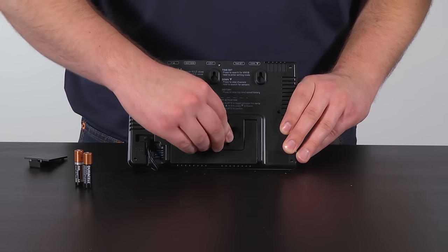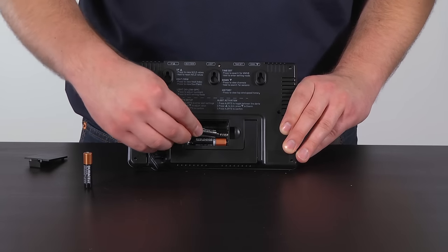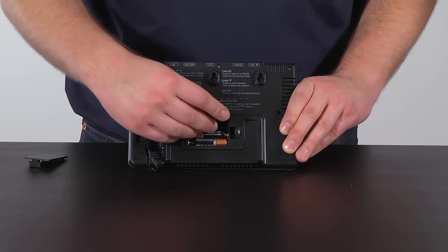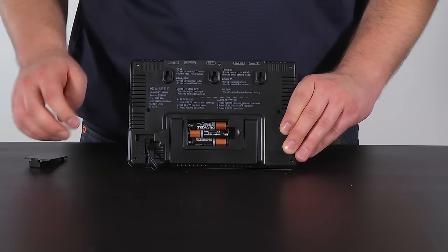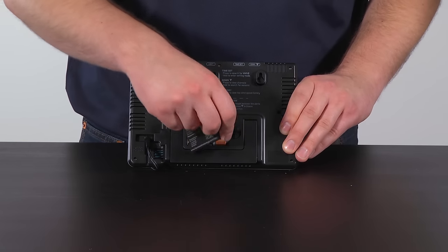We then recommend inserting three new AAA alkaline batteries into the back of the station as well. The batteries are optional, but they will help save your time and weather information during power loss.